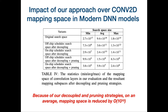Let us look at the impact of our partitioning approach over the Conv2D mapping space in modern DNN models such as ResNet-50 and MobileNet V2. The table on the slide shows statistics of the mapping space of convolutional layers used in our evaluation. On average, the original search space of Conv2D operators is on the order of 10^18. After partitioning and pruning in our approach, the off-chip subspace is on the order of 10^8 and the on-chip subspace is on the order of 10^7 — a total of around 10^8 — representing a reduction of 10^10 from the original search space. Using our approach, we were also able to reach close to the roofline peak performance of accelerators.